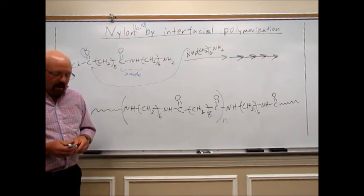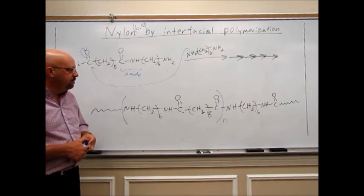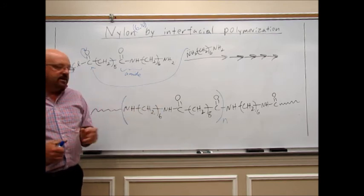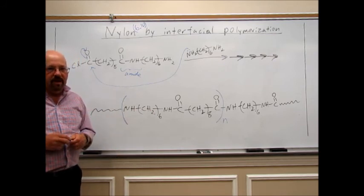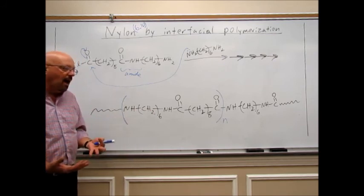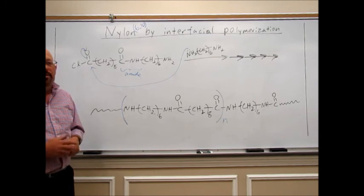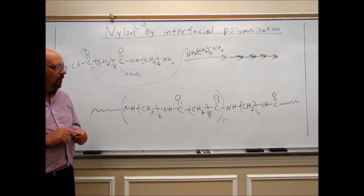Kevlar is another polyamide. It's got some benzene rings in there instead of alkyl chains. Kevlar is used as bulletproof vests. So you can see it would have a lot different properties, depending on what the groups are, how many carbons you have and everything in between.